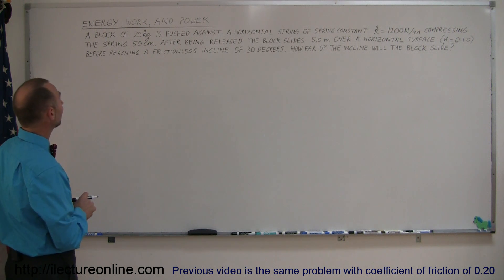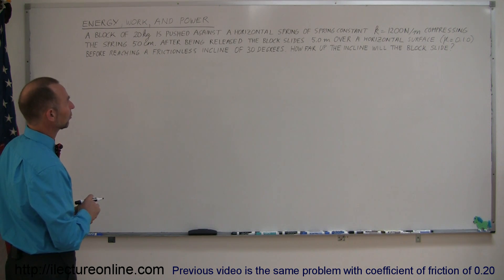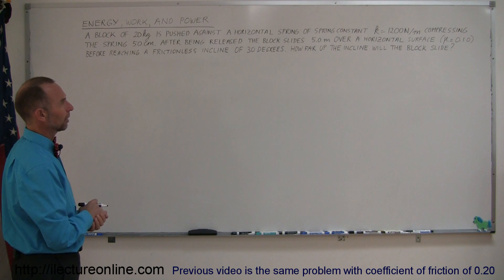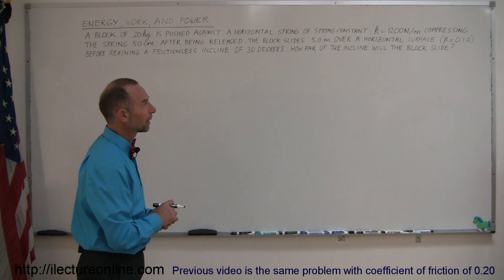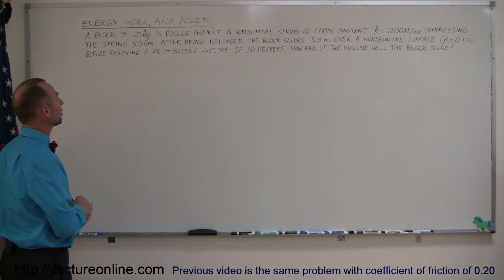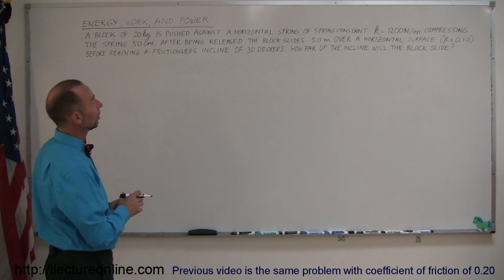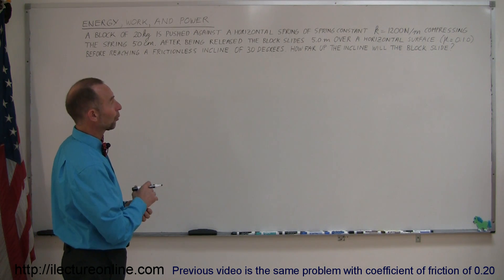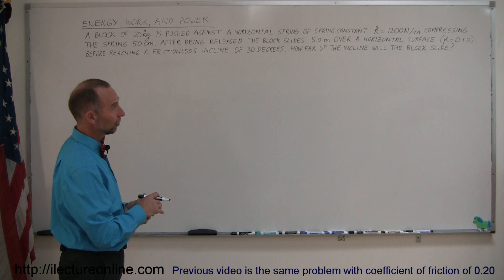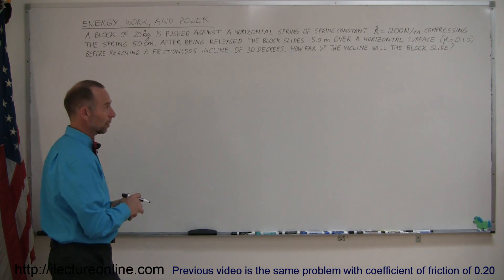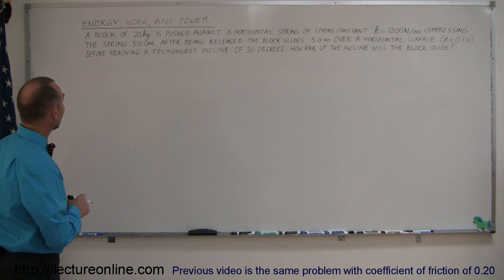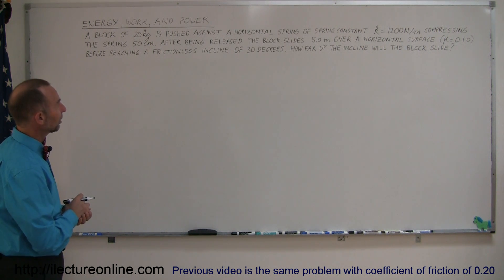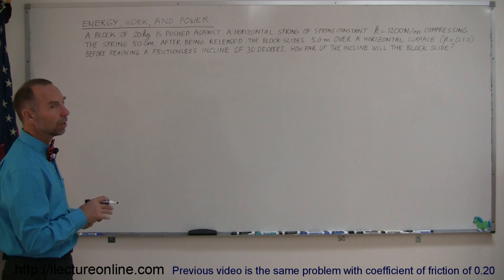It says here, a block of 20 kilograms is pushed against a horizontal spring of spring constant k equals 1,200 newtons per meter, compressing the spring 50 centimeters. After being released, the block slides 5 meters over a horizontal surface with a coefficient of friction of 0.1, and then it reaches a frictionless incline of 30 degrees. How far up the incline will the block slide?